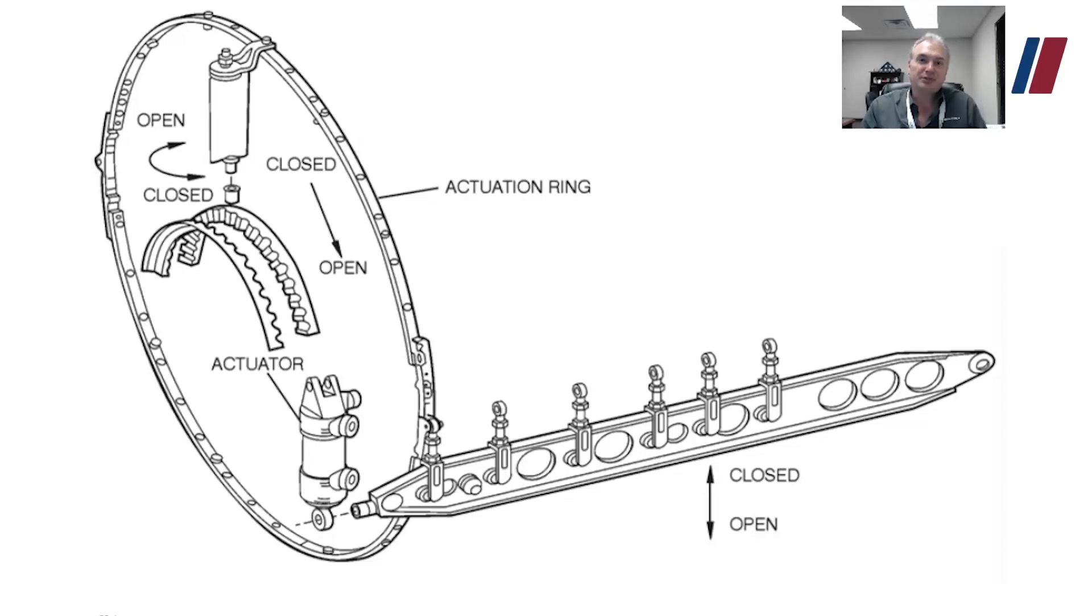Now let's talk about the high-pressure compressor variable stator veins. The variable inlet guide vein is the very first one that's connected to this actuator. These actuators are mounted 6 and 9 o'clock on the HPC stator case. Basically, this actuator arm will go up and down based on this actuator that's mounted here. And as they move up and down, it pivots all of the veins simultaneously.